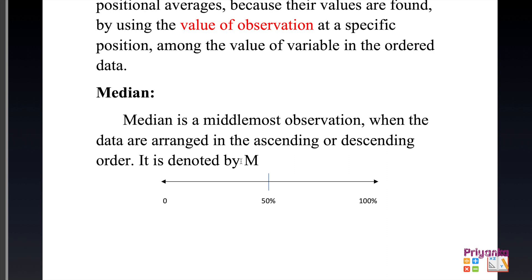Median is the middlemost observation. When data are arranged in ascending or descending order, it is denoted by M. I have shown one example with a line drawn from 0 to 100%. If the information is given to find out 50%, the middlemost information — at the center of 100% — is the median.